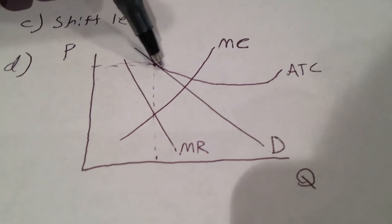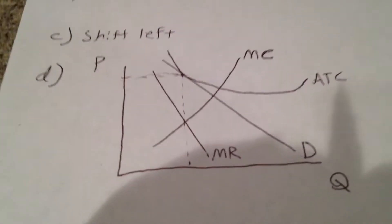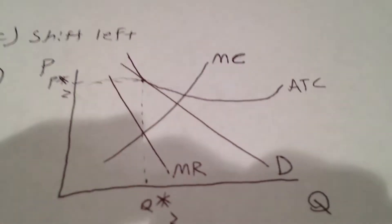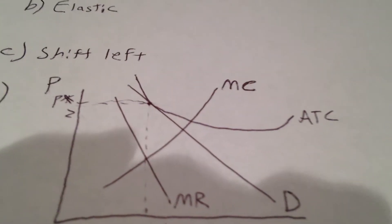So the profit is zero. So there's no profit in the long run. And now we should label this Q star, maybe two, and then the price star two. And these are our new equilibrium price and quantities at the profit-maximizing.